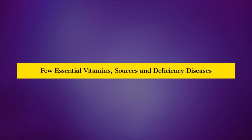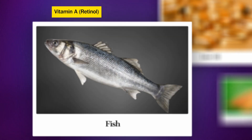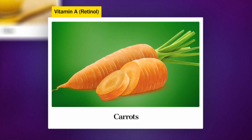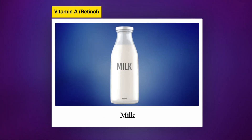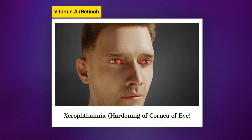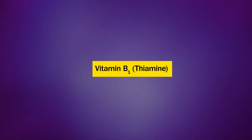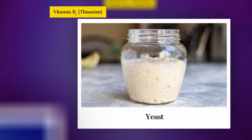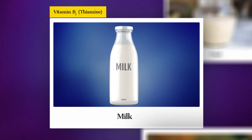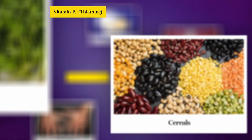Vitamin A (Retinol): Sources — fish liver oil, carrots, ghee, and milk. Deficiency disease — Xerophthalmia (hardening of cornea). Vitamin B1 (Thiamine): Sources — yeast, milk, green vegetables, green leaves, and cereals. Deficiency disease — Beriberi, with increased or decreased appetite and absence of hunger.